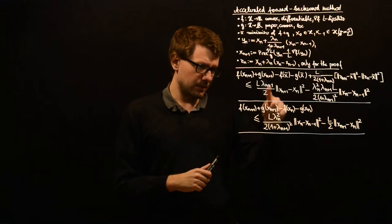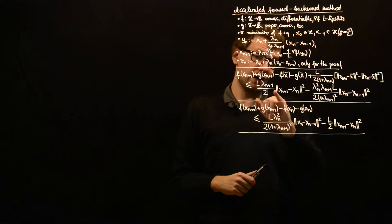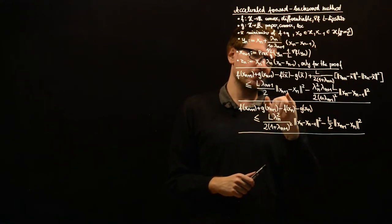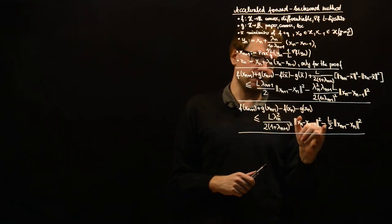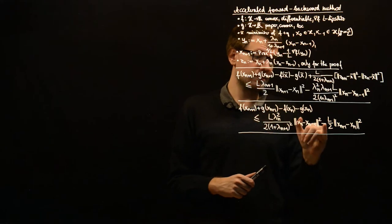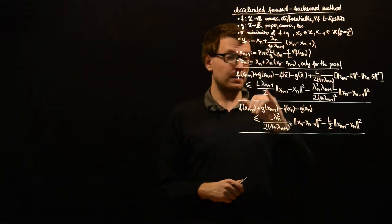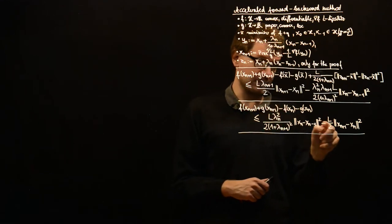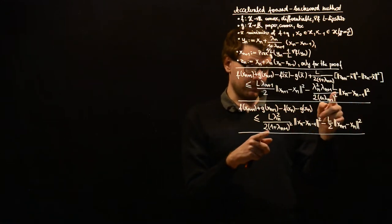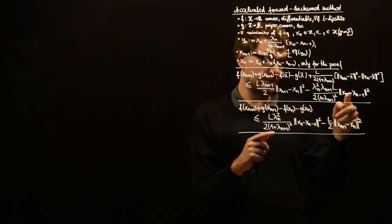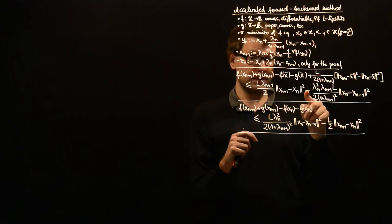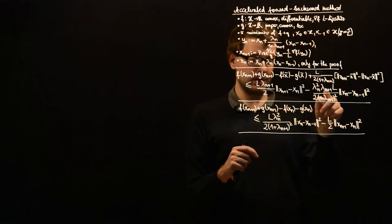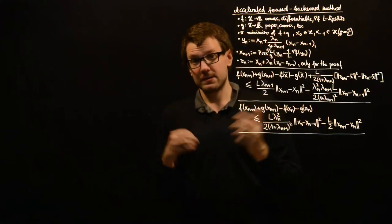The second observation is that we have almost the same term — the norm of x_{n+1} minus x_n — in both inequalities. Once with a plus sign and once with a minus sign. In the first inequality we have an additional factor of λ_{n+1} compared to the second. The same holds for the norm of x_n minus x_{n-1}: minus in the first inequality, plus in the second, and an additional factor λ_{n+1} in the first but not the second.